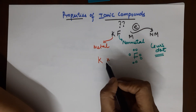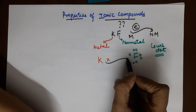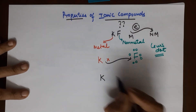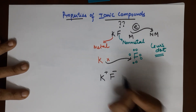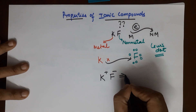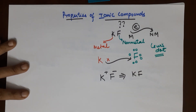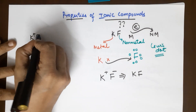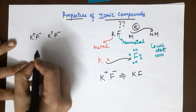The octet can be completed if fluorine gets an electron from somewhere. So potassium gives its valence electron to fluorine, leading to potassium losing an electron — K⁺ — and fluorine gaining an electron — F⁻. Since the charges are neutralized, we write them as KF.